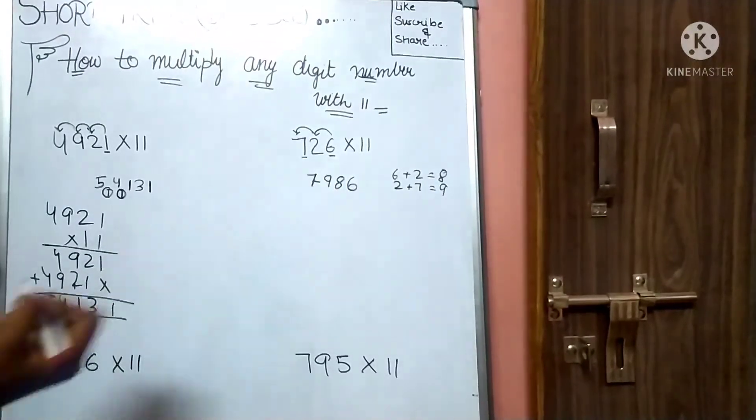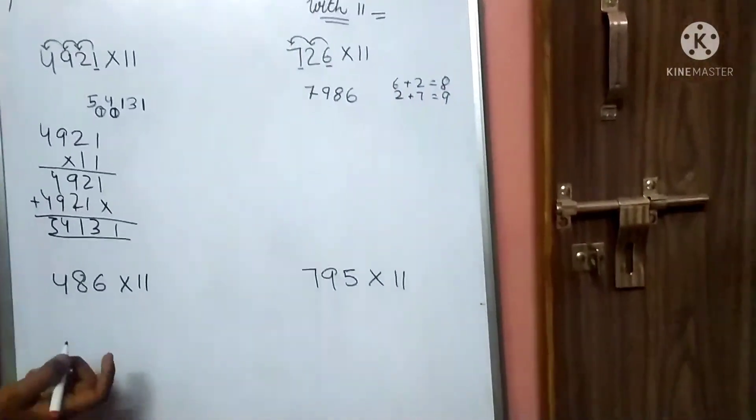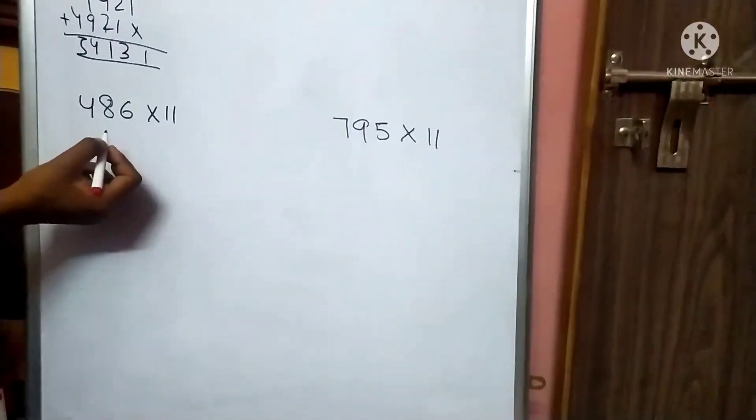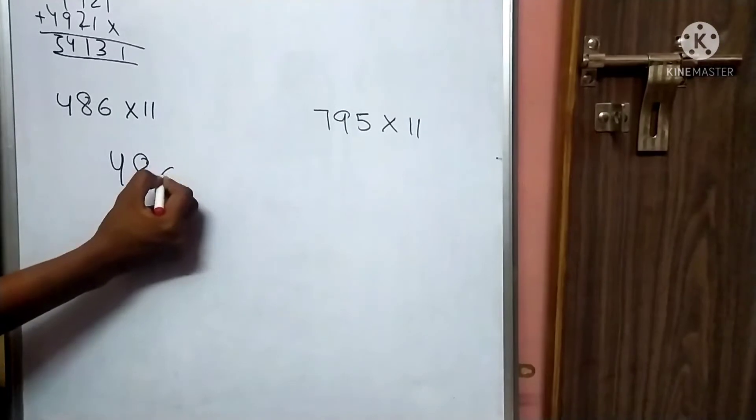So my last digit will be 7. Let's go. 486 times 11. So what did I say? Once place as it is.